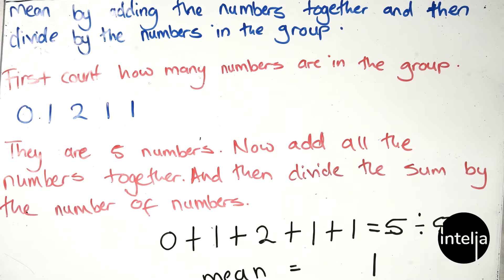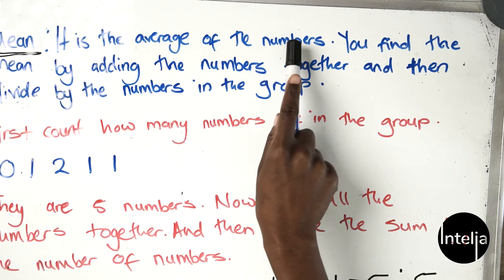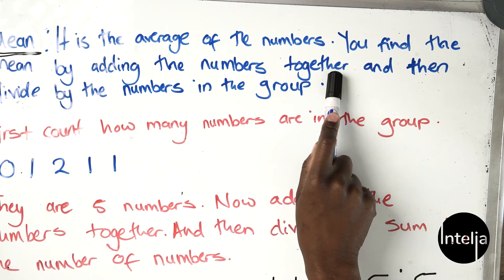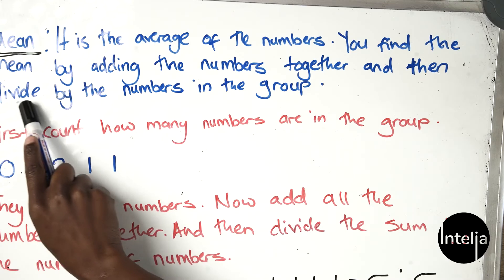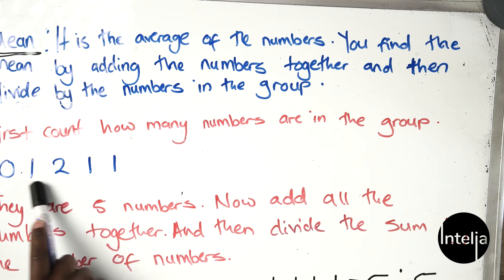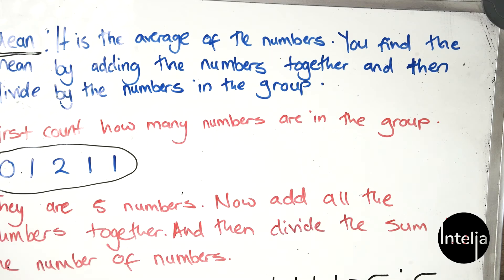This is how you calculate your mean each and every time you're asked to find the mean. The mean is the average of the numbers - you find it by adding the numbers together and then dividing by the number of numbers in the group.